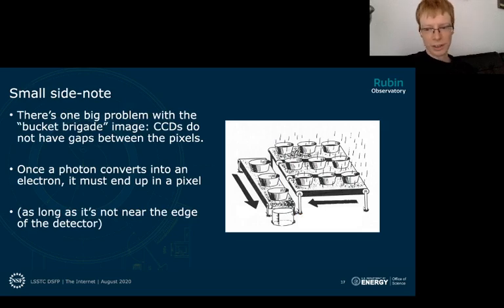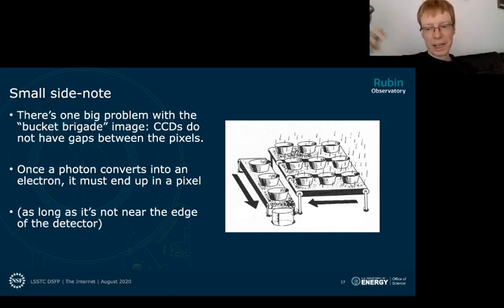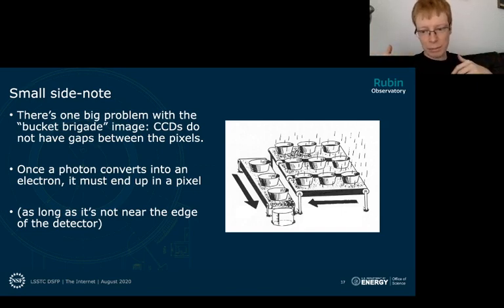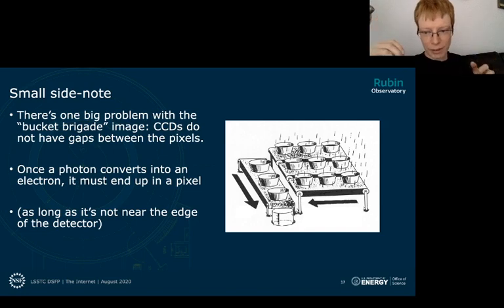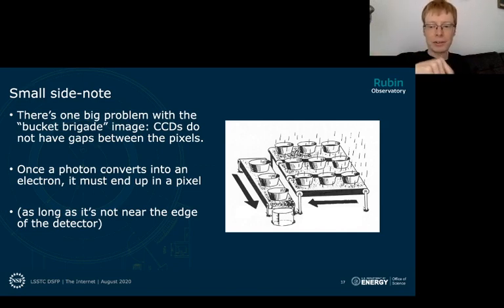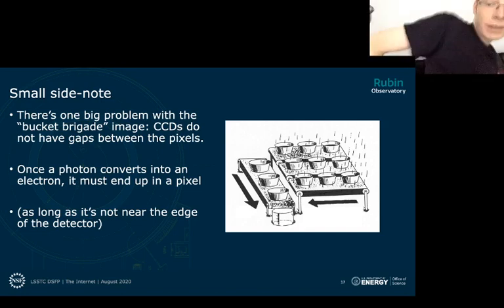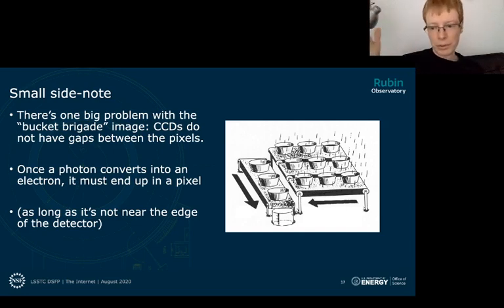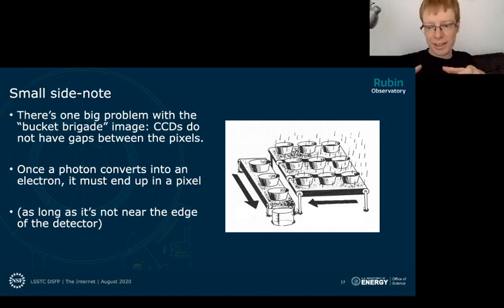I want to clarify one potential misconception from the bucket brigade illustration: in CCDs there are no gaps between pixels. When a photon comes in and turns into an electron, that electron has to go somewhere. As long as we're talking about the middle of the sensor, it has to end up in one of the electrodes collecting charge for a pixel. This matters when processing images, because when we add up charge inside a set of pixels, we have confidence that we're getting everything — no charge was lost to falling through gaps.